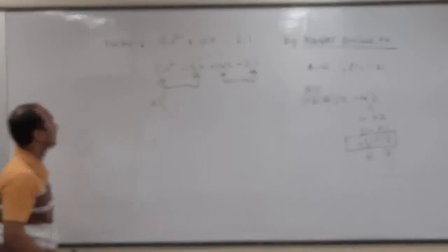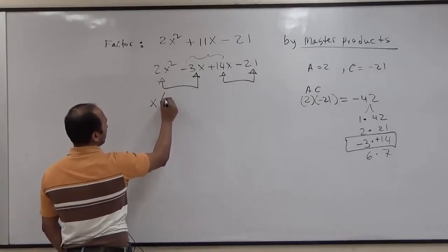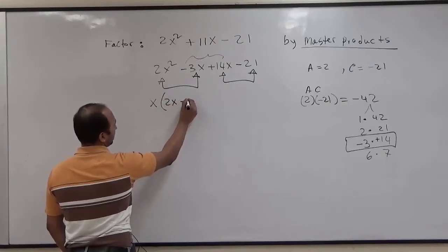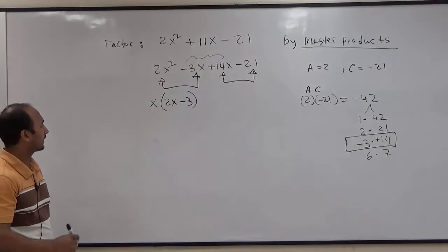So when I take out x, the common factor from the first group, we'll have 2x minus 3 inside the parenthesis.